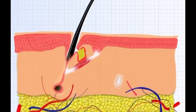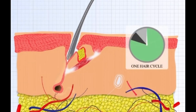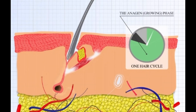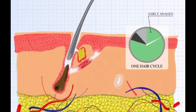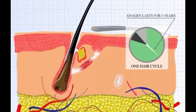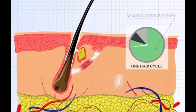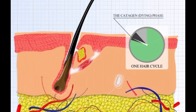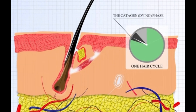Hair grows in a cyclic process. There are three phases: Anagen, Catagen, and Telogen. The Anagen phase is the growing phase — at any given time, 80 to 85% of our hair is in this phase.